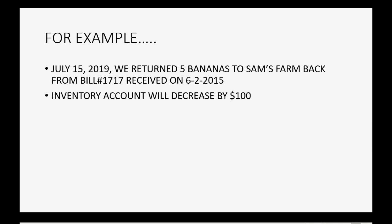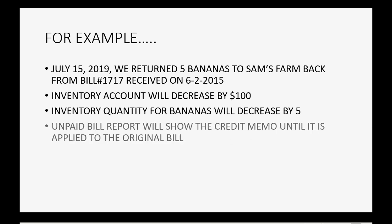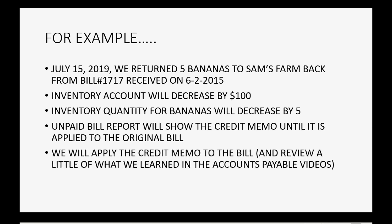The inventory account will decrease by $100 because we paid $100 originally when we purchased those five bananas. The inventory quantity for bananas will decrease by five, and the unpaid bill report will show the credit memo until it is applied to the original bill. Then we will apply the credit to the bill.